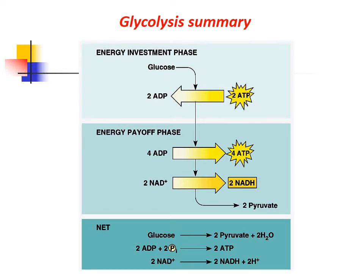Glycolysis in summary: Glycolysis has two phases. In the energy investment phase, two ATP molecules are utilized. In the energy payoff phase, four ATP molecules, two NADH molecules, and two pyruvate molecules are produced.